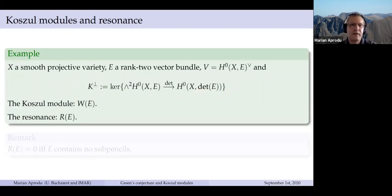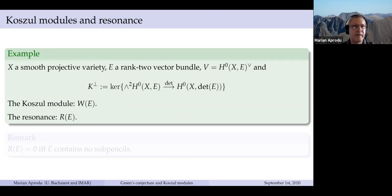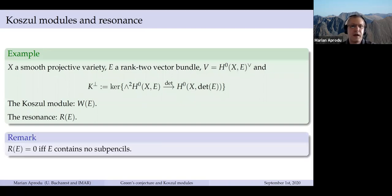Another example comes from the Gauss-Wahl map: if C is a curve and L is a line bundle, you have the Gauss-Wahl map which associates to two vectors F, G the form F dG minus G dF. With this setup we have a resonance and a Koszul module. As it turns out, the resonance will be zero here. In representation theory, if you take a two-dimensional vector space U, consider a positive integer N, and take the N minus one symmetric power of U dual, you can decompose wedge-two of Sym^{N-1} by the Clebsch-Gordan rule and take K to be the first summand. The resulting Koszul module is called the Weyman module.